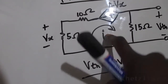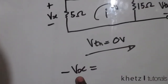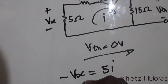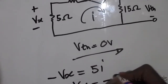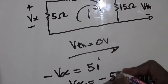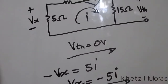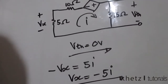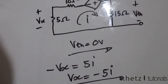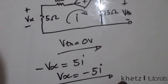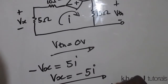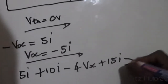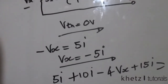We're going to say negative vx is equal to 5 multiplied by i, so vx equals negative 5i. Going around this loop, we say: 5i plus 10i, then negative 4vx, plus 15i is equal to 0.